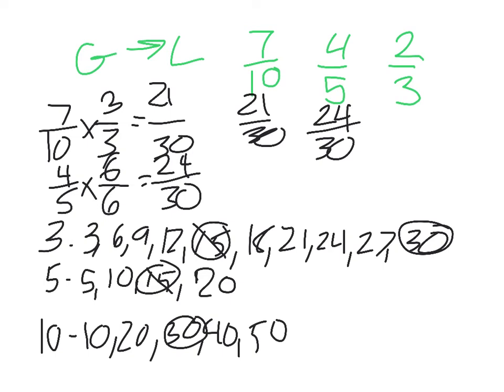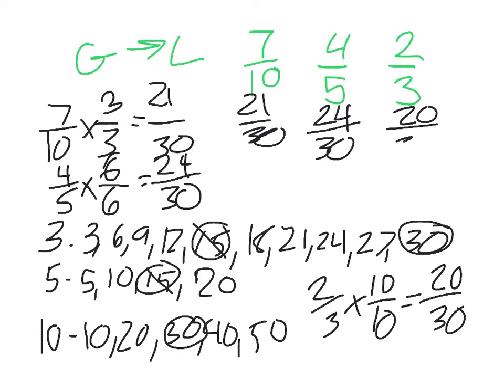And, let's see, two-thirds times something equals something over thirty. Three times ten will give me thirty. Ten over ten is one whole. And then, two times ten is twenty. So, twenty over thirty.